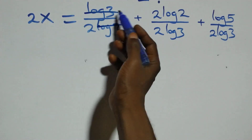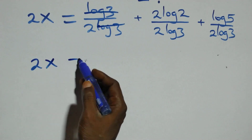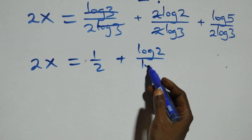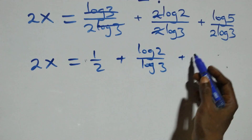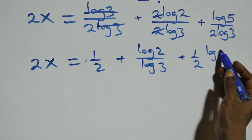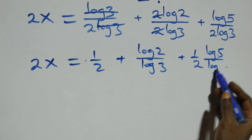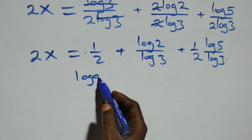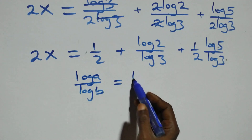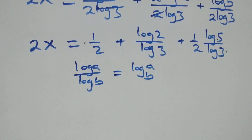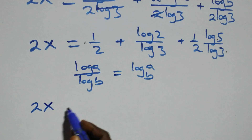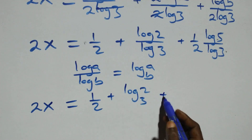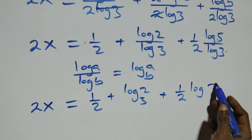Applying the power rule of logarithm: log 3 cancels and we get 1 over 2. For the second term, the 2s cancel giving log 2 over log 3. The third term becomes 1 over 2 times log 5 over log 3. Then applying the change of base rule — log a over log b equals log base b of a — we have 2x equals 1 over 2, plus log base 3 of 2, plus 1 over 2 times log base 3 of 5.